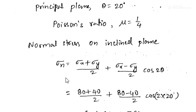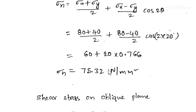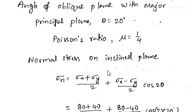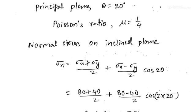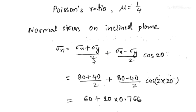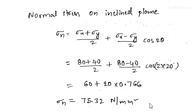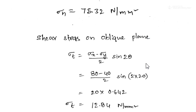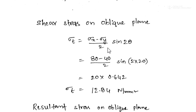For the derivation of this normal stress and shear stress formula on the oblique plane, please refer to the previous video on principal stresses and strains, case two. Substituting the given values — σx = 80, σy = 40, and θ = 20° so 2θ = 40° — and simplifying, we get the tangential or shear stress on the oblique plane as 12.84 N/mm².